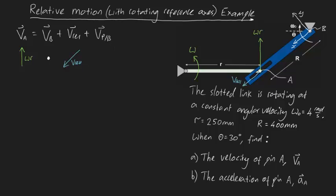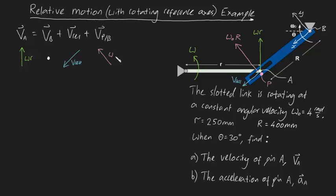Now let's talk about V_P relative to B. Point P is a point on our link at the same position as point A. Because it's on the actual link, it abides by circular motion formulas. Since omega is in this direction, V_P relative to B will be tangential to the circular path this rod sweeps out. Because this is rotating with angular velocity omega naught, it has a velocity of omega naught times R.